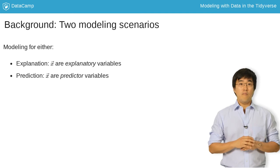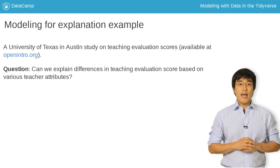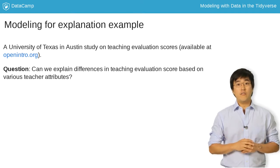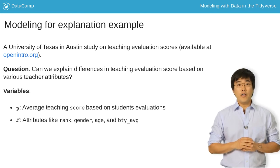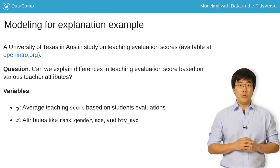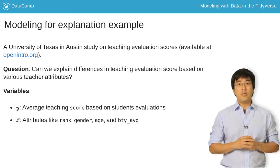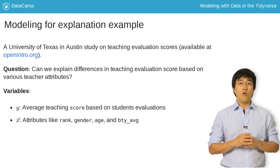Let's start with an example of modeling for explanation. At the end of academic terms at many universities and colleges, instructors are given teaching evaluation scores by students. A study conducted at the University of Texas Austin investigated whether differences in scores could be explained by differences in instructor attributes. The outcome variable is average teaching score for different courses. Explanatory variables include rank, gender, which at the time of this study was recorded as a binary variable (male or female), age, and even the instructor's beauty score, BTY average.